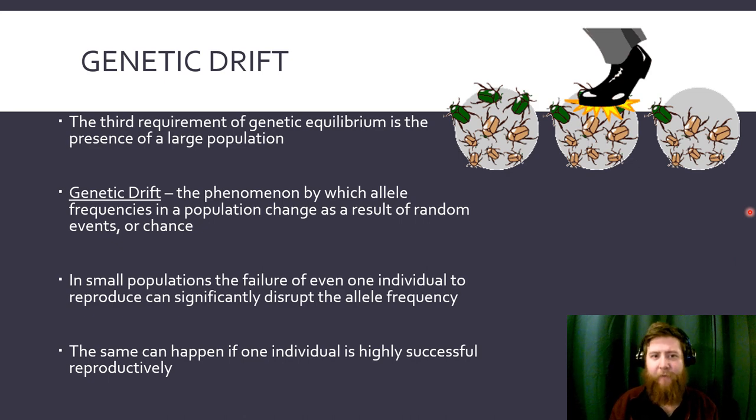Another phenomenon we see is called genetic drift. The third requirement for our genetic equilibrium or Hardy-Weinberg is the presence of a large population. In genetic drift we have this phenomenon by which allele populations change randomly in a population. In this guy here, the green ones aren't being hunted, they're not more likely to be stepped on—this was just a random event that happened, and now the genetics are much different in this population. Instead of having lots of these green alleles, we now have one individual with that. In small populations especially, the failure of one individual to reproduce can significantly disrupt this allele frequency. However, if this guy turned out to be a very attractive beetle and was able to mate successfully and reproduce a lot of times, this could very quickly change in his population—his allele could very quickly become one of the more dominant ones in a population.